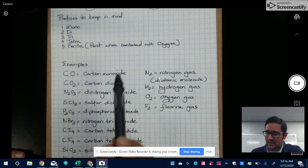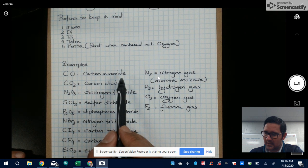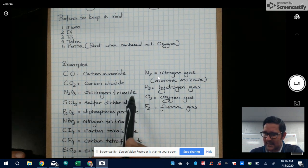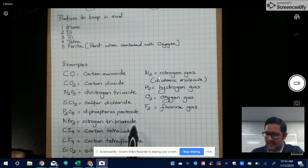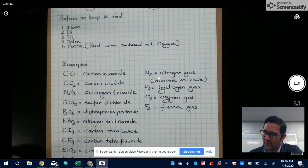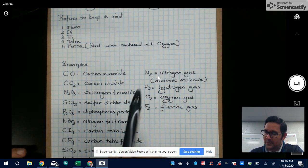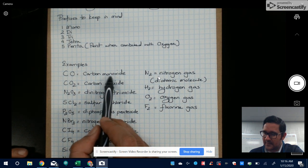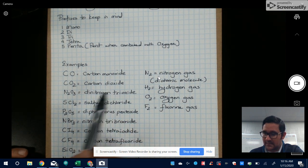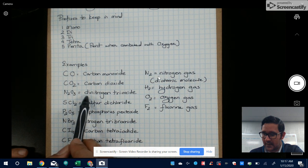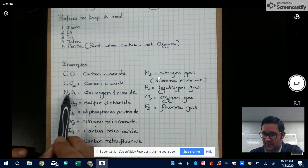The second element, just like we did for the ionic compounds, the last part of the element becomes IDE. So that still stands just like it was for ionic compounds. Now the prefixes are going to come in right here. Sometimes you'll see the prefix show up for the first element also if you have two of them.